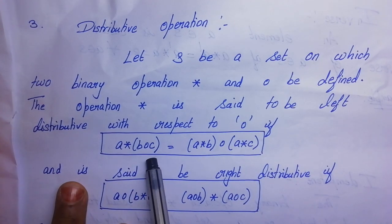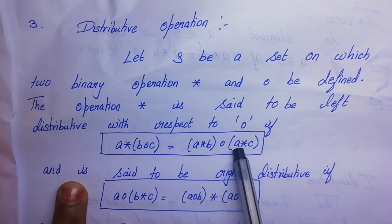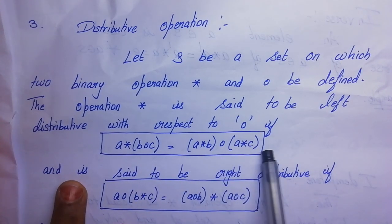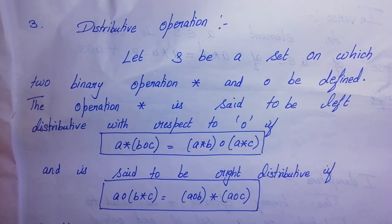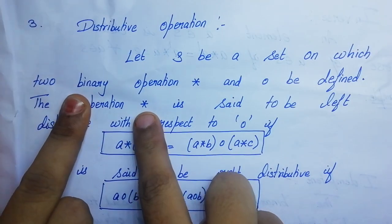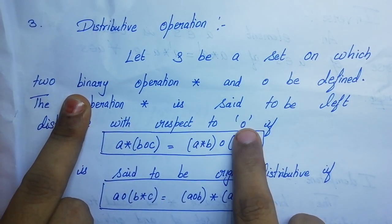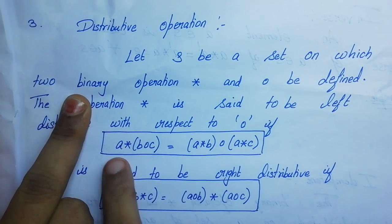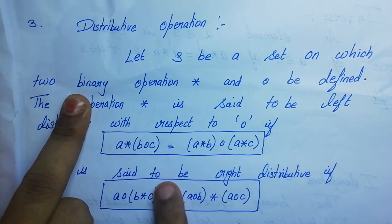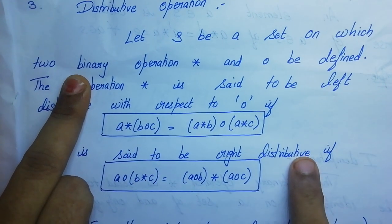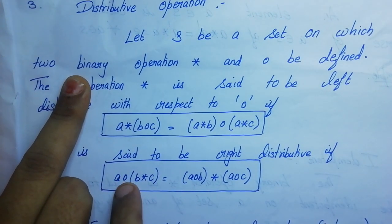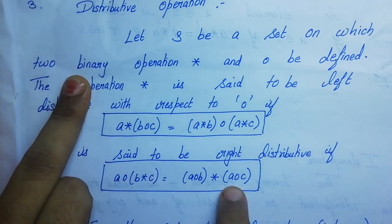Left distributive means: A star (B composition C) is equal to (A star B) composition (A star C). It is said to be right distributive if (A composition B) star C equals (A composition B) star (A composition C).